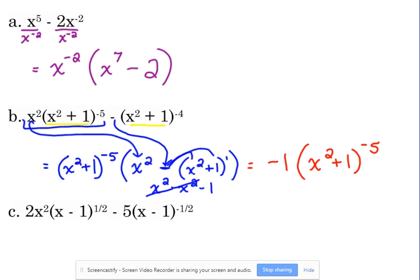So we really just have a negative 1 in front of x squared plus 1 to the negative 5th. I simplified what was in my second set of parentheses by distributing the negative. The x squares cancel. We're left with negative 1. I put coefficients in front.